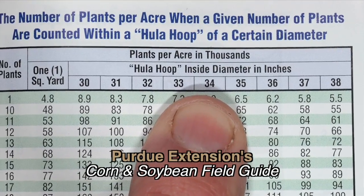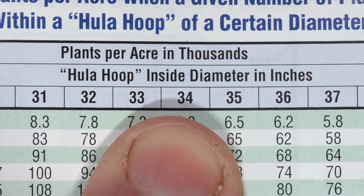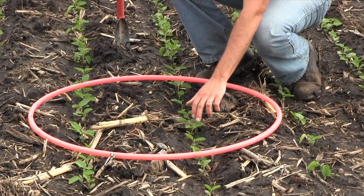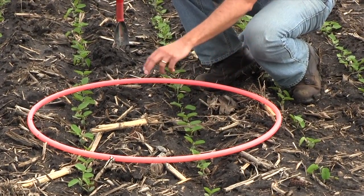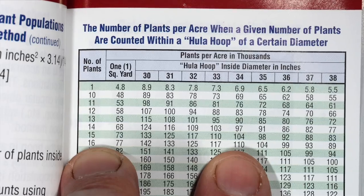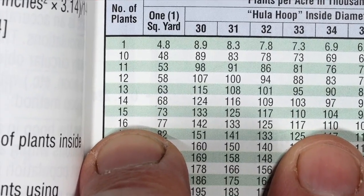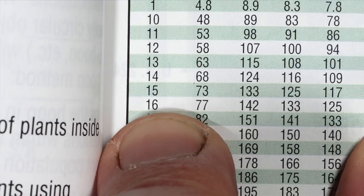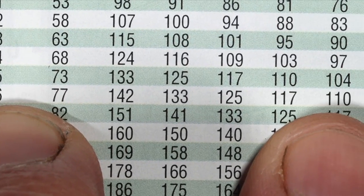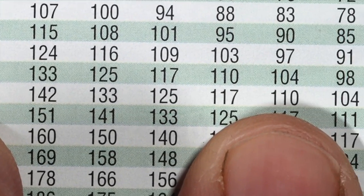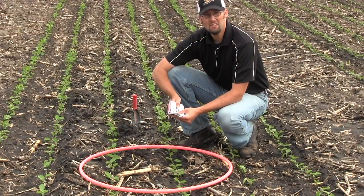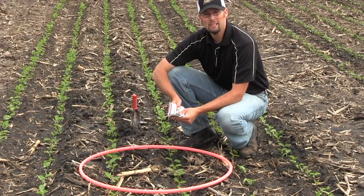As I count using the hula hoop method, I count: 1, 2, 3, 4, 5, 6, 7, 8, 9, 10, 11, 12, 13, 14, 15, 16. So at 16 plants, we'll look it up in our corn and soybean field guide to see what our stand is. With 16 plants and a 34-inch diameter hula hoop, our stand is 110,000 plants per acre.